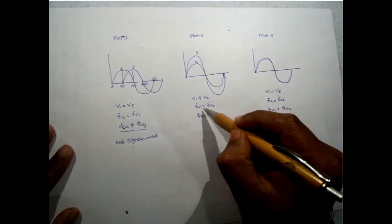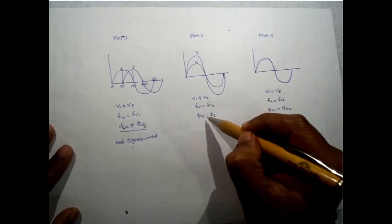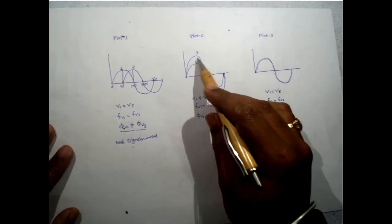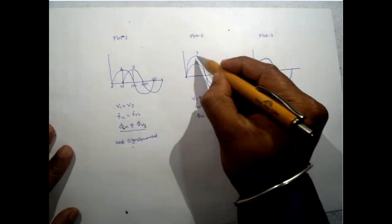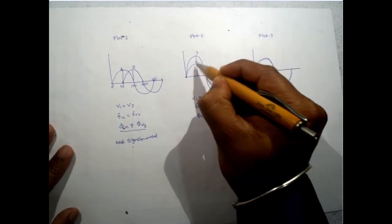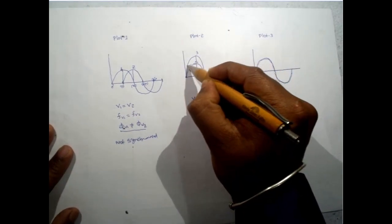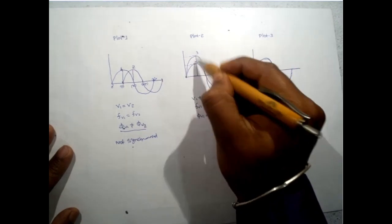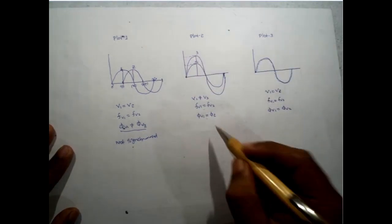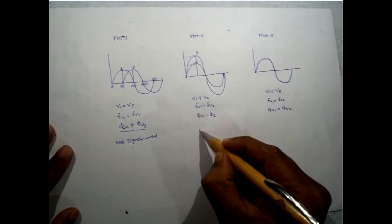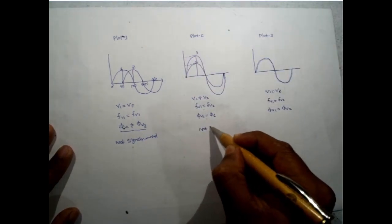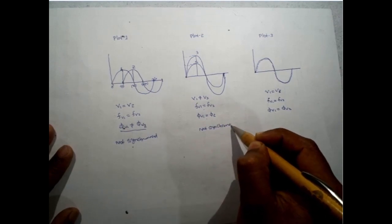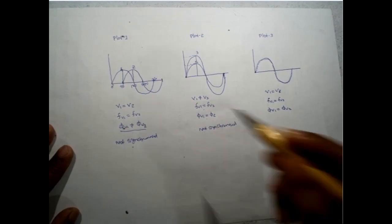In the next case, frequency and phase are equal, but since voltage is not equal — you can see the difference between plots 3 and 4 — this is also not synchronized, because of unmatching in the voltage magnitude.